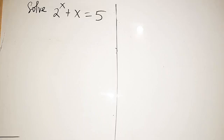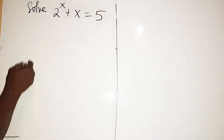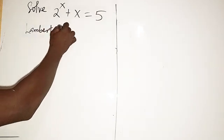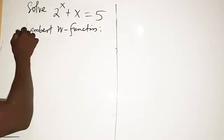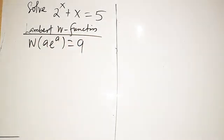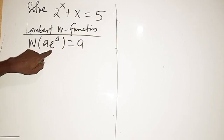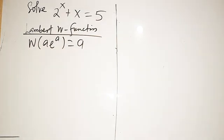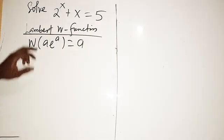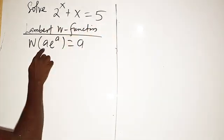Hello, good viewers — you are highly welcome. Let's see how we are going to solve this beautiful exponential equation. We are going to be using the Lambert W function to get the value of x. Stay focused. The Lambert W function states that when you have W(a·eᵃ), this gives us a — meaning when you have a multiplying e to the power a, you get a back.